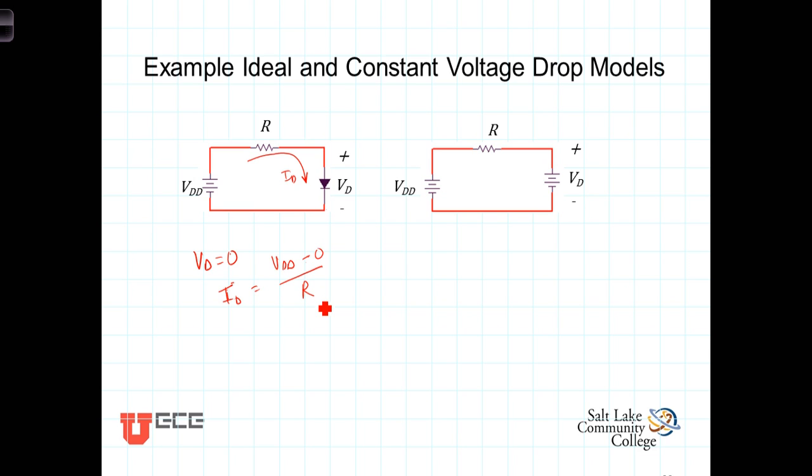Under the constant voltage drop model, the diode would be modeled with a constant voltage drop of V sub D. And then in this case, the current would be I sub D would equal the voltage source here, VDD, minus the voltage drop, the constant voltage drop model of the diode, divided by R.